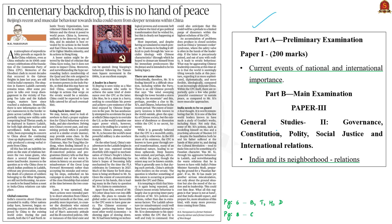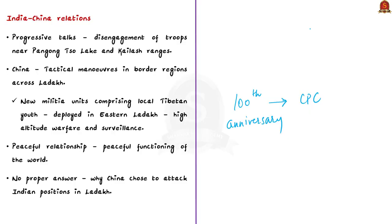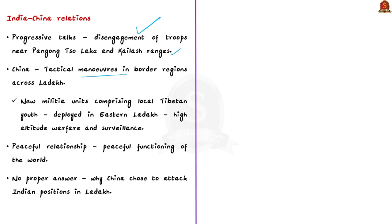Last year strained India-China relations to a maximum level, though by year's end there was some progress — progressive talks over disengagement of troops near Pangong Tso Lake and the Kailash ranges. However, progress has reached a deadlock. China is now planning tactical maneuvers in border regions across Ladakh, reportedly raising new militia units comprising local Tibetan youth, planned for deployment in eastern Ladakh for both high-altitude warfare and cyber operations. Such deployments have further strained relations.